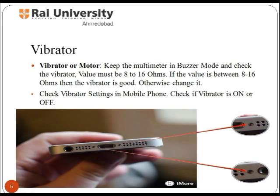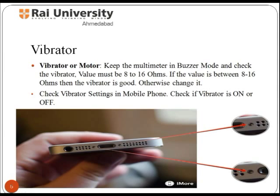Vibrators have become one of the generic components in most mobile phones. Vibrating alerts are primarily used when a user cannot hear the ring. To test the vibrator, use a multimeter. If the value is between 8 to 16, then the vibrator is good; otherwise, change it.